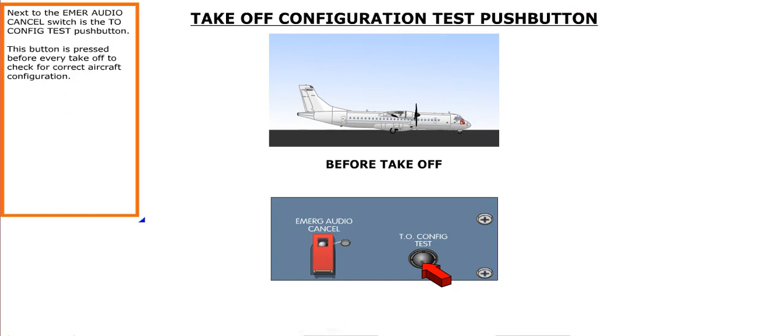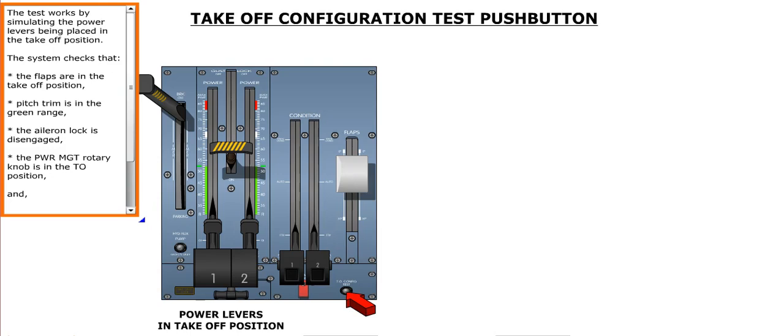Next to the emergency audio cancel switch is the takeoff configuration test push button. This button is pressed before every takeoff to check for correct aircraft configuration. The test works by simulating the power levers being placed in the takeoff position.